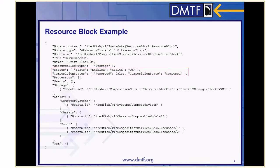This property is an array since a manufacturer could embed multiple types of components on a single resource block. Two properties are used to describe the status of a resource block. The common status property is used to reflect the health of the resource block, while the composition status is used to show the composition related information. Within composition status, the composition state property shows the current use of the resource block. In this case, we know this particular resource block belongs to a composition since the state is set to "composed".